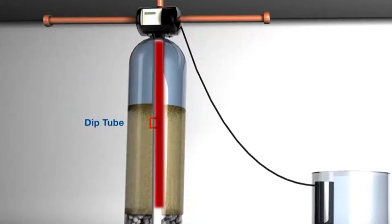Next, we have the dip tube. This tube is also known as the distribution tube or riser tube. The next element in the system is the resin.